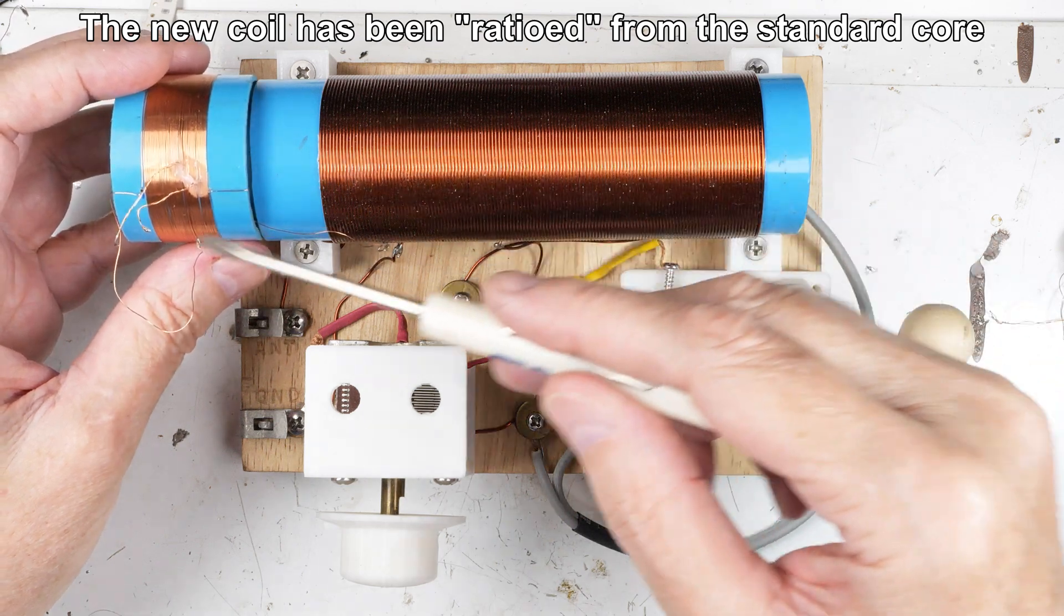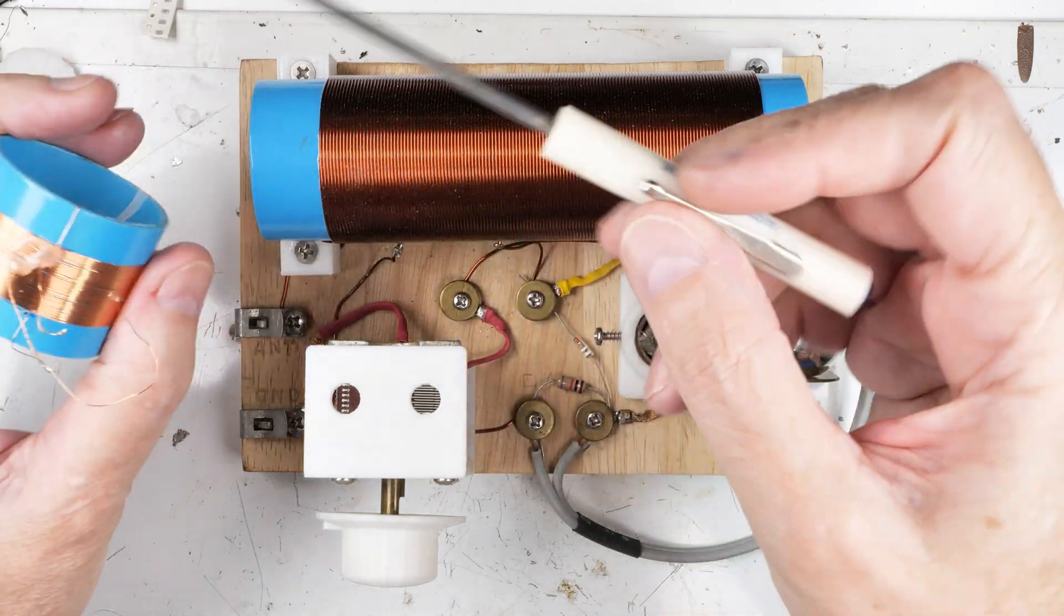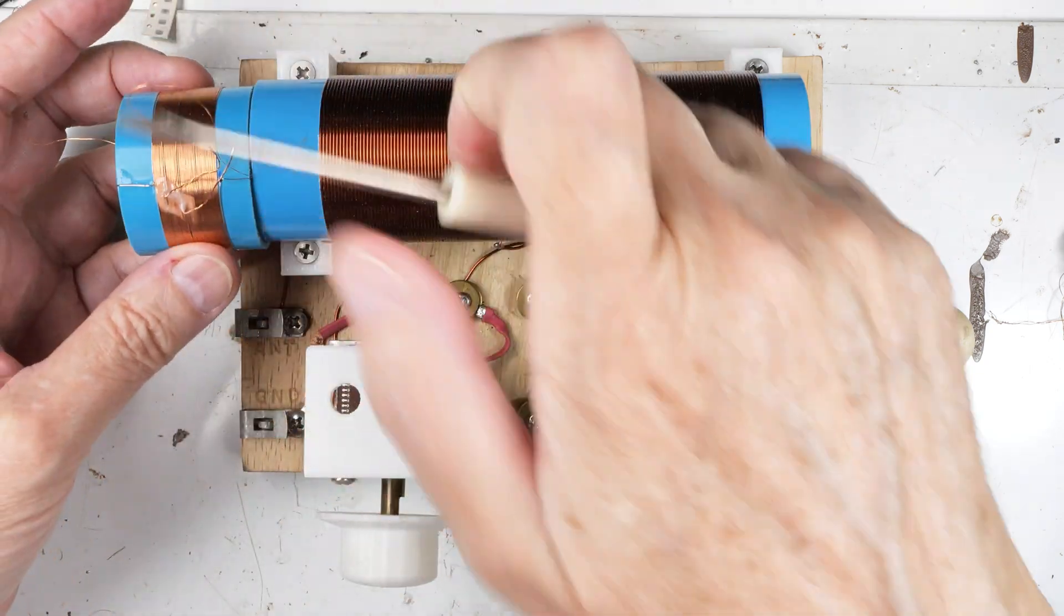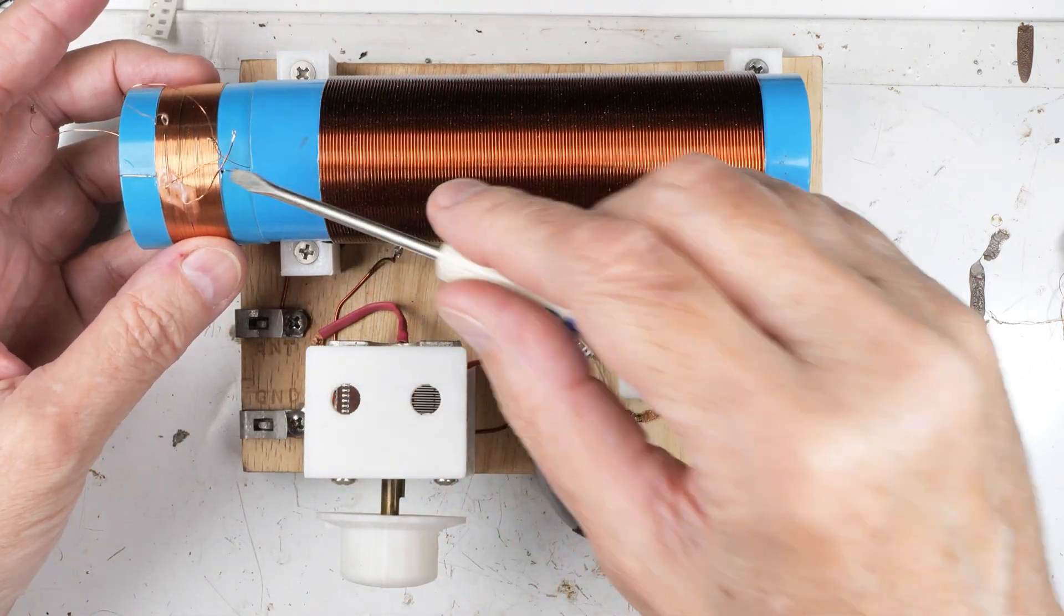The antenna. So it goes antenna, ground. Got it the wrong way around. Antenna, ground, earphone, and then the capacitor.